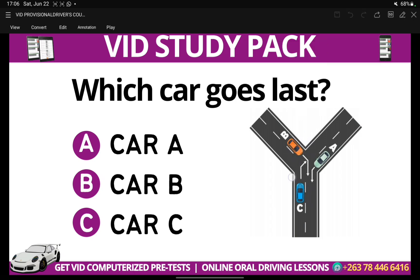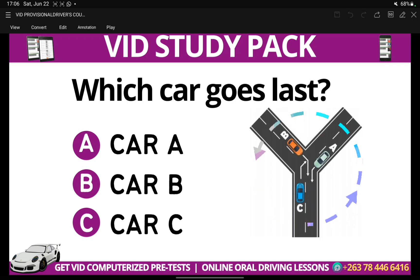Car A gives the right of way to traffic approaching from its right, which is Car B. Car B gives the right of way to traffic approaching from its right, which is Car C. So Car C — will it also give the right of way to traffic approaching from its right, which is Car A? A lot of people get confused and get into that spiral effect.